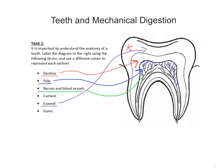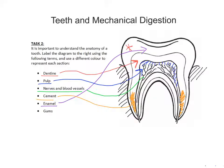That leads us to the cement and the gums. The cement is the name given to the bottom part of our dentine — this region here, which I'll shade in yellow. The gum is what's left over in the picture: the outside area around the tooth. So we have a simple picture of tooth anatomy: enamel on the outside, dentine a bit deeper, then the pulp with nerves and blood vessels, cement at the bottom, and the gums around the tooth.